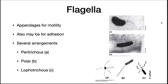Flagella are also rooted in the cell membrane and reach out to the environment as shown in the images. Flagella are implements of motility and can be thought of as little propellers that allow the bacteria to swim through liquid. Sometimes flagella can also help bacteria adhere to surfaces. There can be several arrangements of flagella: in a peritrichous arrangement, flagella are distributed throughout the cell surface. Bacteria with polar flagella have one flagellum at the end of the cell. In a lophotrichous arrangement, there are several flagella at one pole.